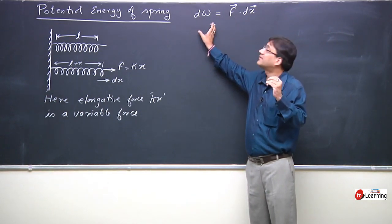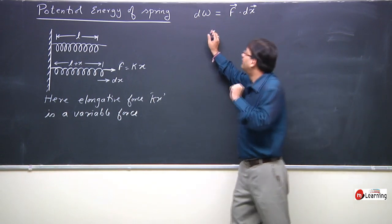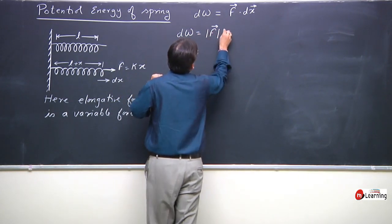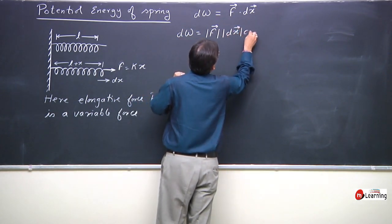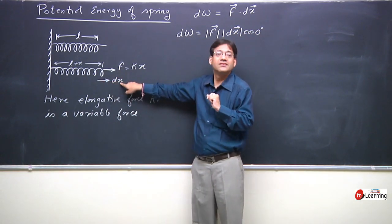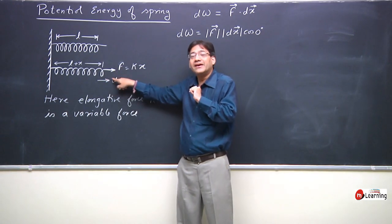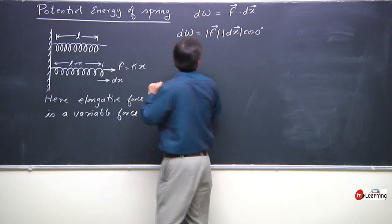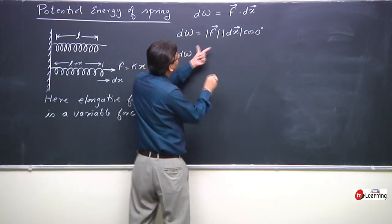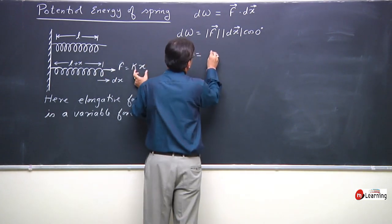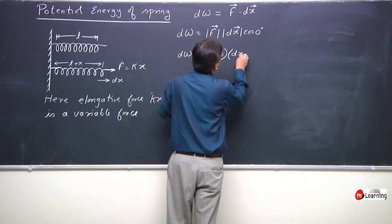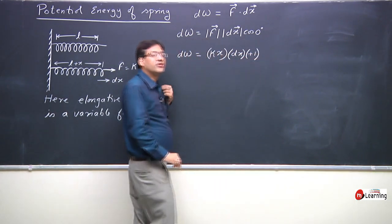This differential work is done by the external agent to displace the spring by differential displacement dx. We write it as: mod of F into mod of dx into cos of angle between them. Observe that force and dx are parallel and collinear — the angle between them is 0 degrees — so cos of 0 degrees equals 1. The magnitude of force is kx and magnitude of dx is simply dx.